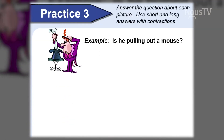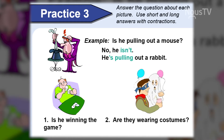We have a few more practice examples. Is he pulling out a mouse from the hat? No, he isn't. He's pulling out a rabbit. Is he winning the game? No, he isn't, I don't think. Are they wearing costumes? No, they aren't.